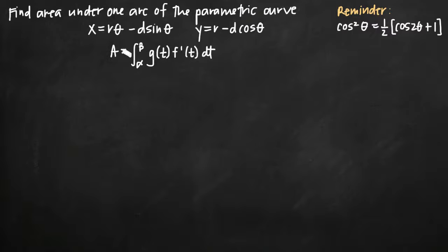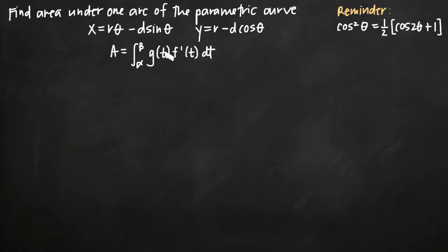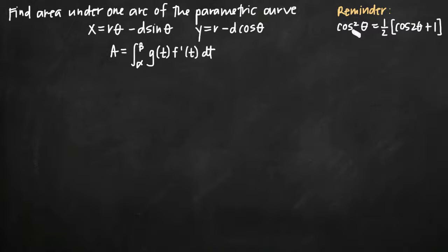The area formula we're going to need to use is: area equals the integral from alpha to beta of g of t times f prime of t dt. This area formula specifically gives you the area under one arc or in one loop of the parametric curve. As a reminder, we have a double angle formula that we're going to need to use a little bit later.